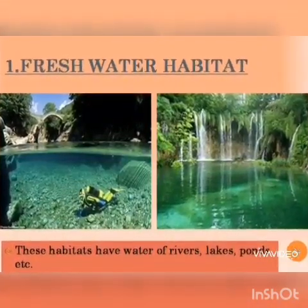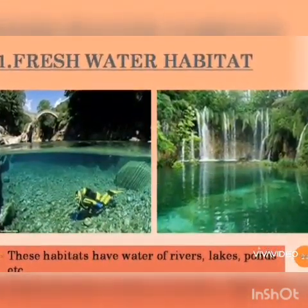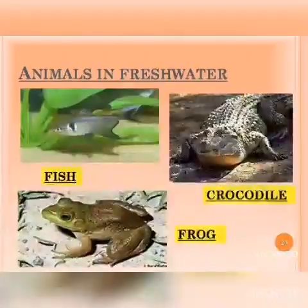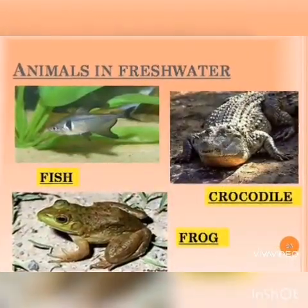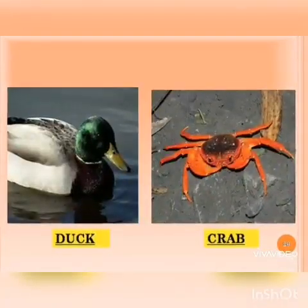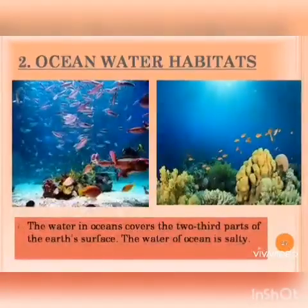Freshwater habitat includes rivers, lakes and ponds. Animals living in this habitat are fish, frog, crocodile, ducks, crabs etc.